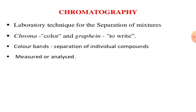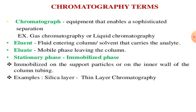Chromatographic terms: a chromatograph is the equipment that enables sophisticated separation, for example gas chromatography or liquid chromatography. Eluent is the fluid entering into the column, or the solvent that carries the analyte. Eluate is the mobile phase leaving the column.